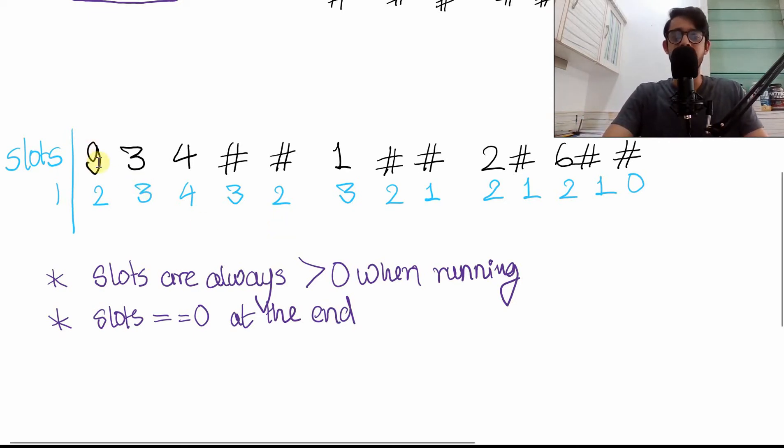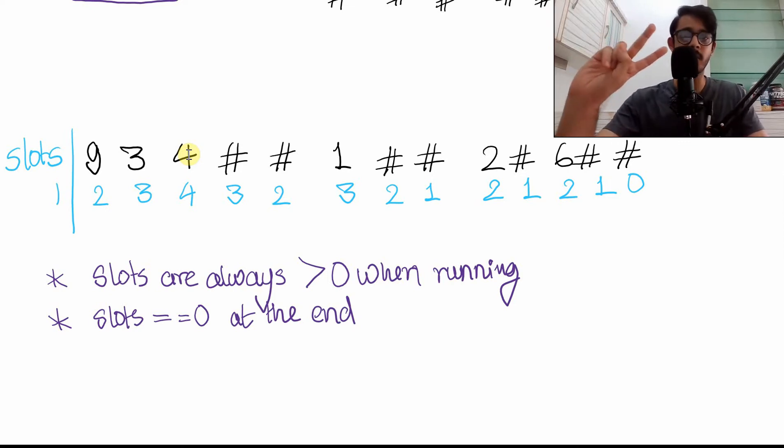which means that it will consume this one. So we had one slot available. Nine consumes one slot now having zero, but also produces two more. So the current score is now two. Similarly, when you see three, three will consume one and produce two more. Four will consume one, produce two more.